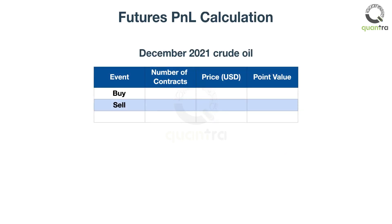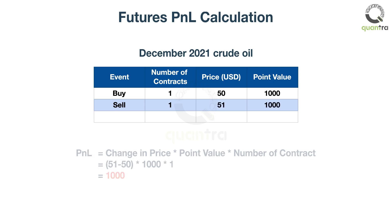Imagine that you buy one contract of December 2021 crude oil at $50. Two hours after you bought it, it is trading at $51. Now you have an unrealized gain or open PNL of $1,000.